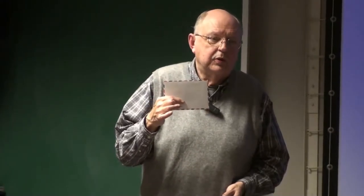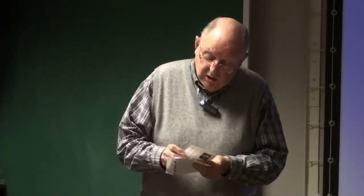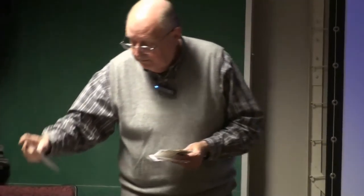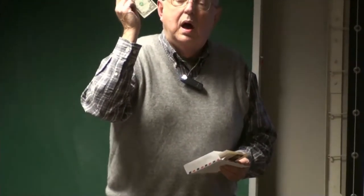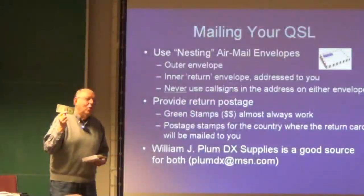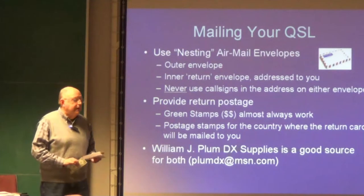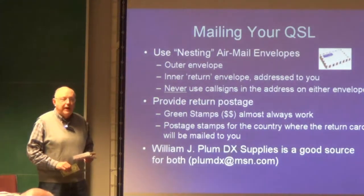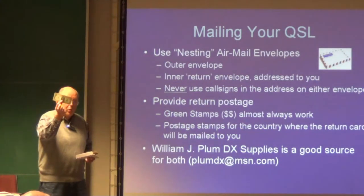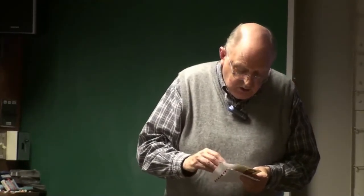Don't put any stamps on the inner envelope — in Greece you can't mail a letter using stamps from the United States or any other country. Inside the envelope you put your QSL card and a green stamp. Folks, it's a dollar bill — it's the way they can pay for a stamp in their country and mail it back to you. In most countries, an airmail stamp costs more than a dollar, so the typical standard these days is to put two dollars in the envelope.